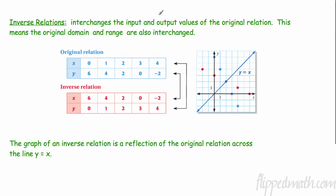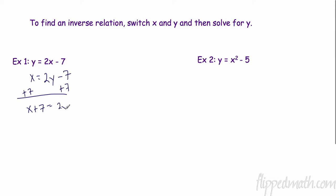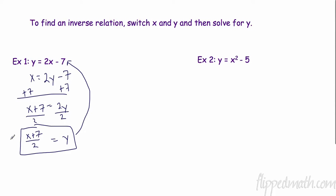Now for the fun stuff: how do we find an inverse? To find an inverse we swap our X's and Y's. So wherever I have Y, I change it to X, and wherever I have X, I change it to Y. Then we solve for Y. To isolate Y, I add 7 to both sides: X plus 7 equals 2Y, then divide by 2, giving Y equals (X plus 7) over 2. That is the inverse.